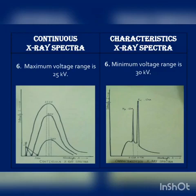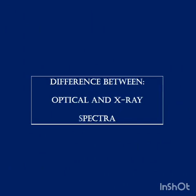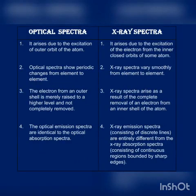Now, the difference between optical and X-ray spectra. First point: optical spectra arise due to the excitation of electrons from the outer orbit of the atom, whereas X-ray spectra arise due to excitation of electrons from the inner closed orbit of the atom. Second point: optical spectra show periodic changes from element to element, whereas X-ray spectra vary smoothly from element to element.